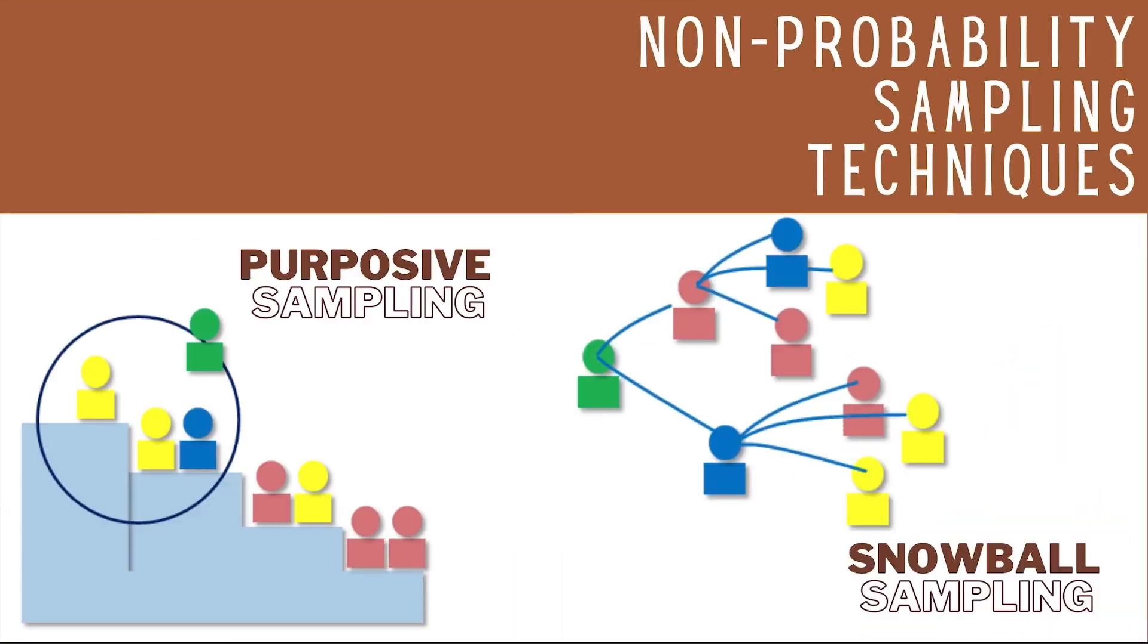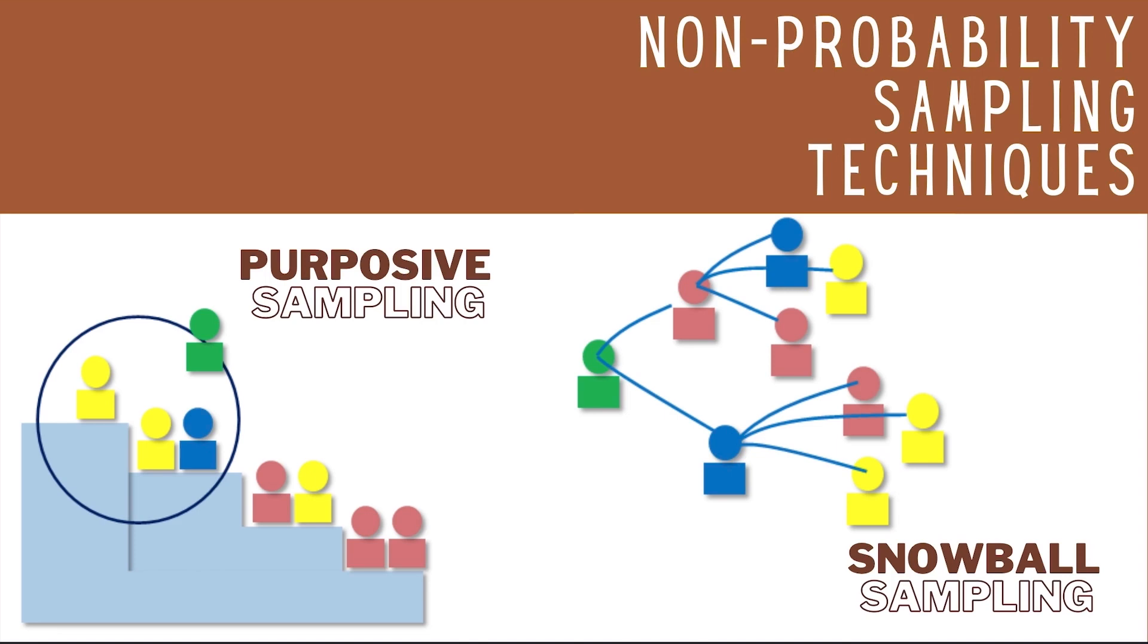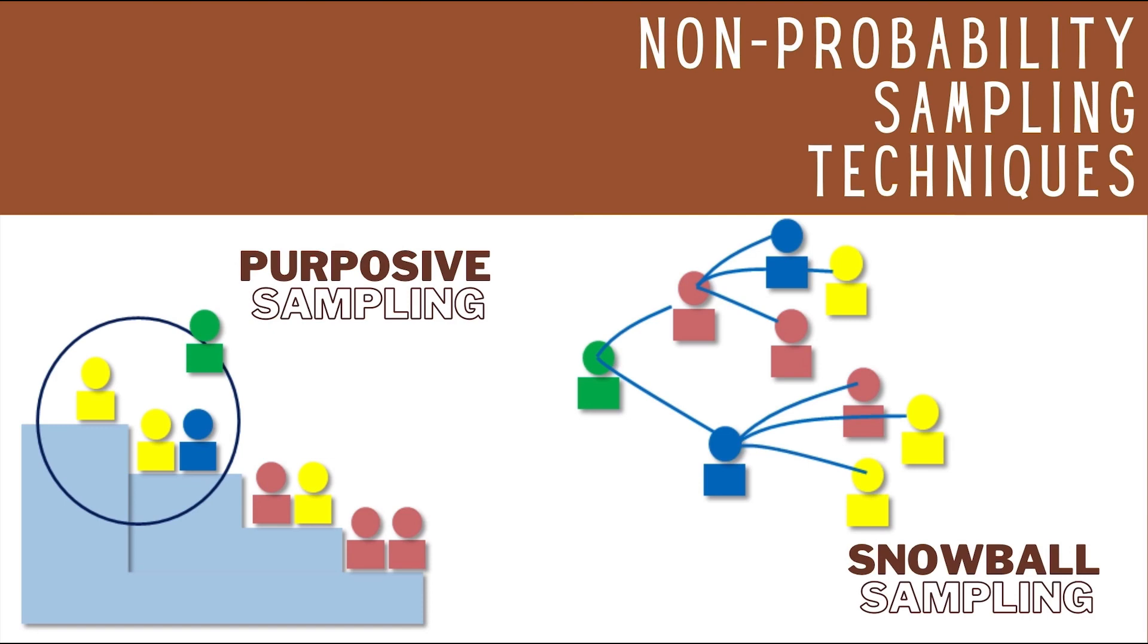Next is purposive sampling, using researchers' judgment to select a sample that they believe, based on prior information, will provide the data they need. Purposive sampling happens when the selection of sample is based on the characteristics of a population and on the objectives of the study. It's also known as judgment, selective, or objective sampling. Karaniwan, ginagamit ang purposive sampling technique kung may natatanging hinahanap ka or katangi ang hinahanap para sa isang sample. Let's say the sample is about teenage pregnancy, which the objective is to showcase the experiences of a teenager living in Poblacion area and who got pregnant at early age.